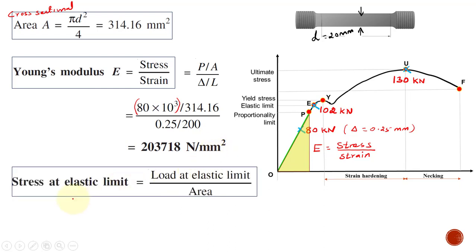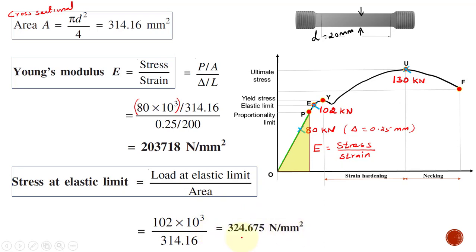Now we calculate the stress at the elastic limit. The load at the elastic limit is 102 kN (102 × 10³ N). Stress at elastic limit = load / area = 102 × 10³ / 314.16 = 324.675 N/mm².